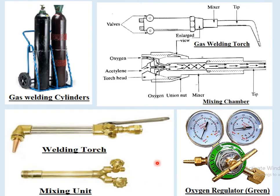Now we can look at the other slide. This is the oxygen gas cylinder and this is the acetylene gas cylinder. The oxygen cylinder will be green in colour and the acetylene will be red in colour. Here we can see a maroon colour mark, and here we can see a green colour mark. This is our mixture unit or mixture chamber. This is the after-mixture chamber; this part will be connected here. And this one is the welding torch. On either side of the oxygen and acetylene, we can see valves.